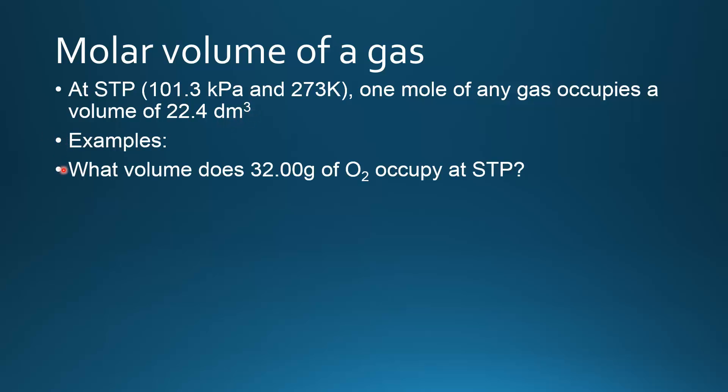Let's try some examples. The first example is: what volume does 32.00 grams of O₂ occupy at STP? We calculate the molar mass of O₂ and that's equal to 32.00 grams per mole.